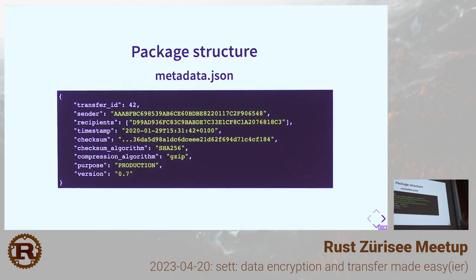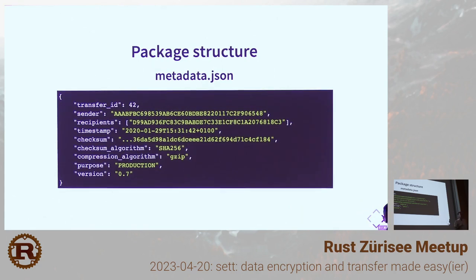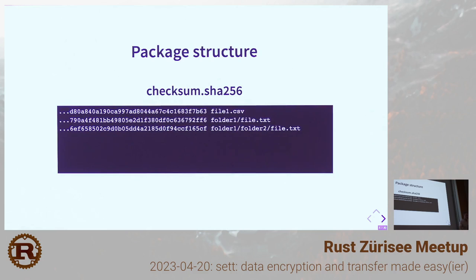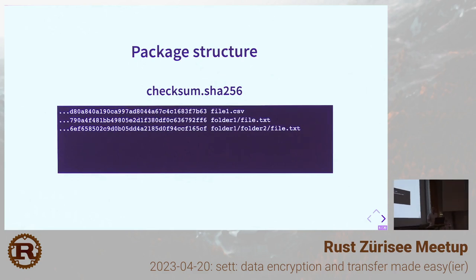If you open the metadata.json, you will see it contains metadata like sender fingerprints, recipient fingerprints, checksum of the data file, and things like transfer ID and purpose — which are specific to the BiomedIT infrastructure. But you could also use SET as a private person outside the BiomedIT context. The SHA-256 checksum file lists the content of the data file with checksums, ensuring the file reaches the right person and has not been corrupted.